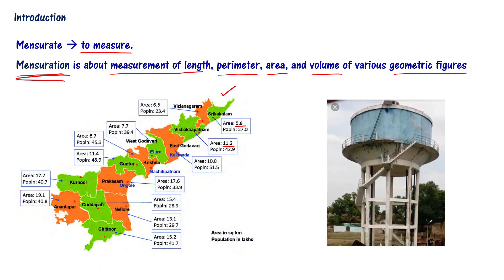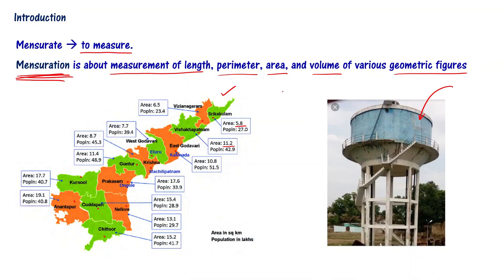Look at this figure — this is an overhead tank used to store water. A lot of water is stored and supplied to villages. Suppose I ask you: what is the volume of this particular overhead tank, or how many liters of water can be stored in this tank? You should be aware of the concepts related to mensuration. It is about the measure of volume. Or if I ask you: what is the area of this blue colored region? Then you should be able to understand what area means.